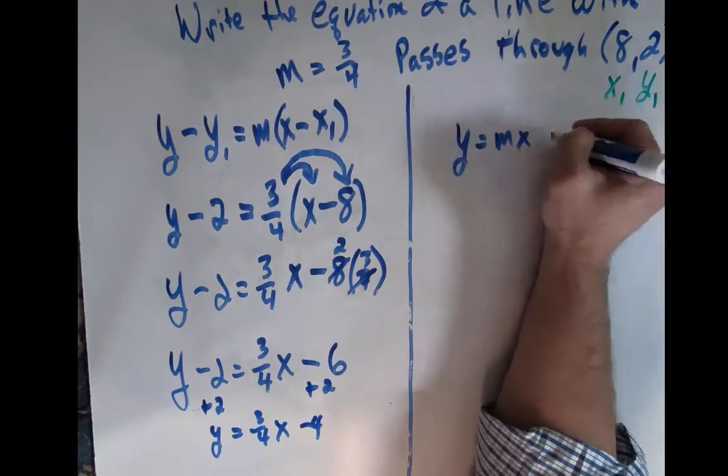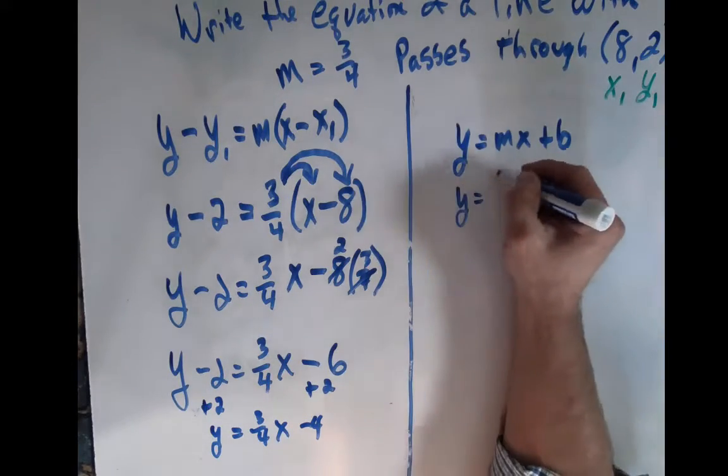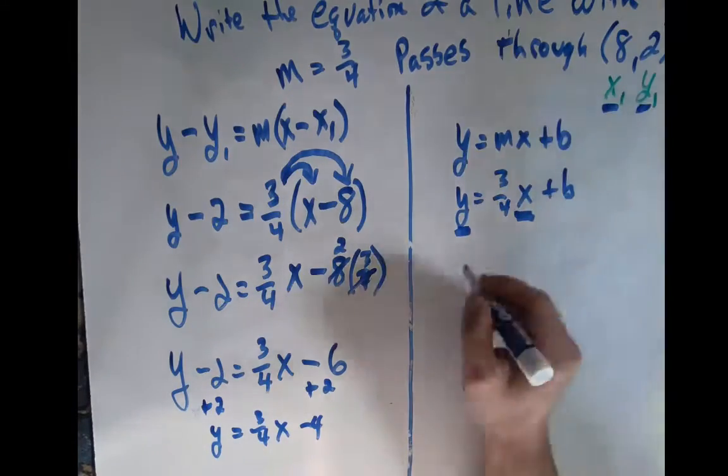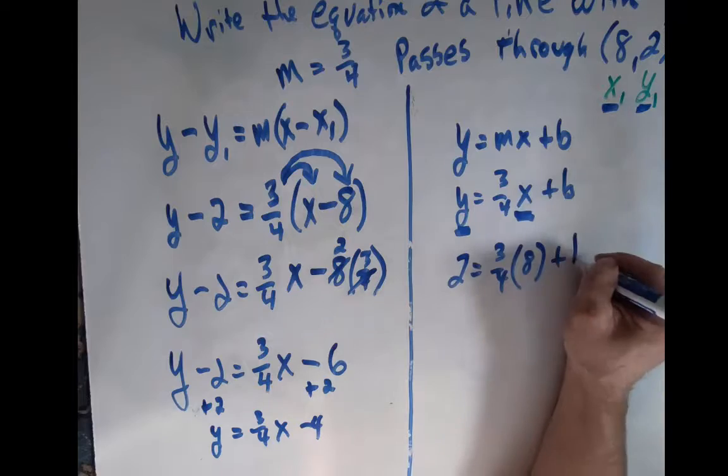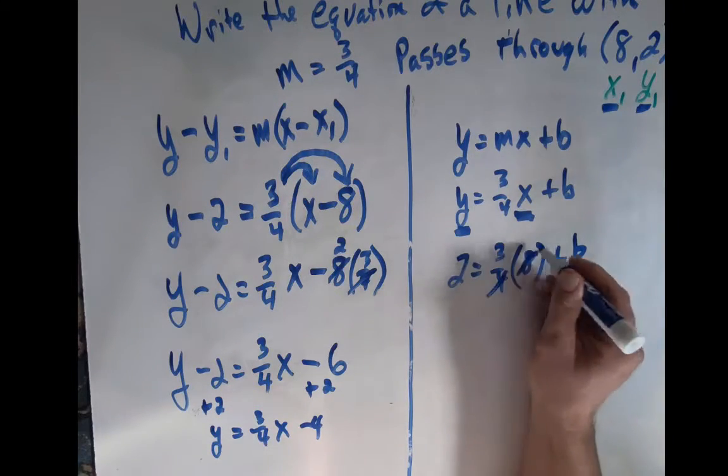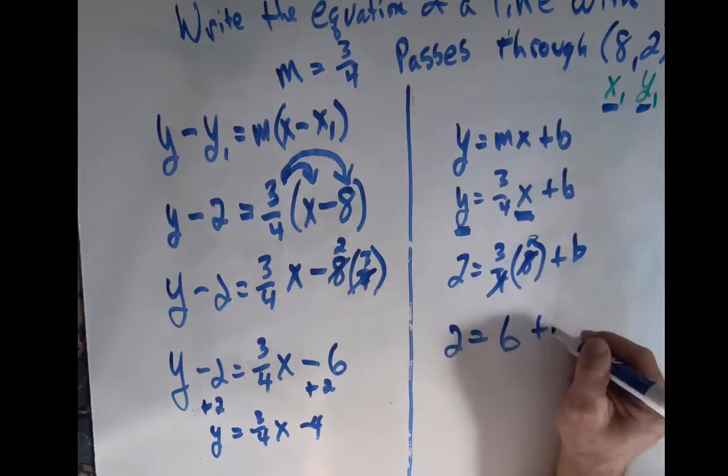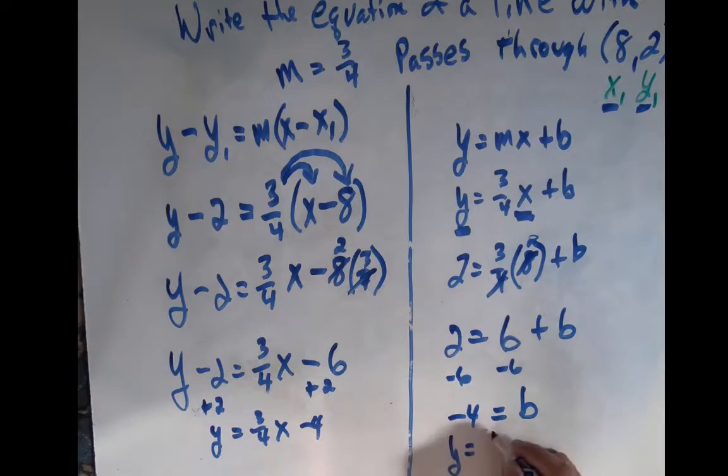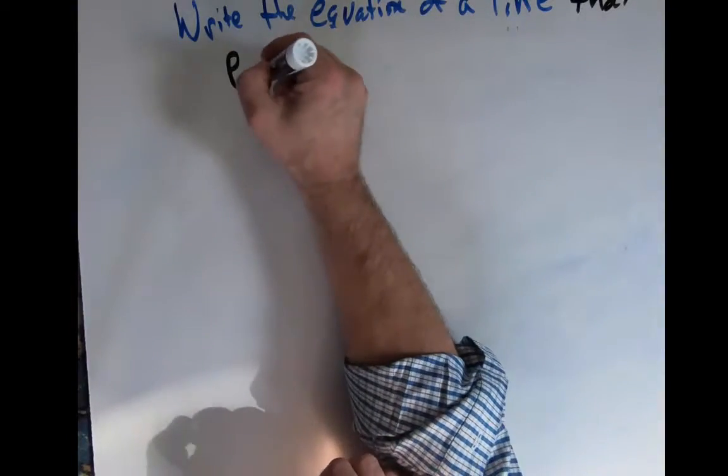So I want to add my 2 to both sides so that I'm in the form of y equals mx plus b and we have it. Now what if we wanted to start right with y equals mx plus b and we know our 3 fourths x where x and y we already have our 8 and 2. Let's plug those in and we know that 3 fourths times 8 is 6. So 2 equals 6 plus b subtract the 6. b equals negative 4, plug that back in, y equals 3 fourths x minus 4. Oh, we got the same answer. That's amazing.